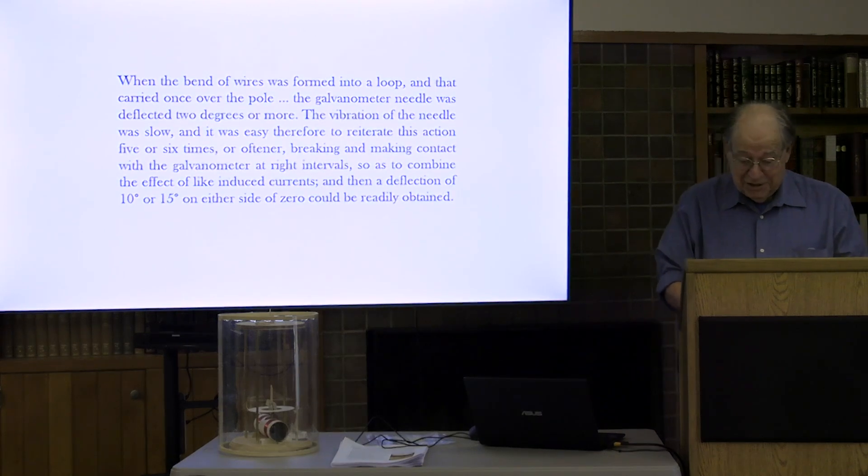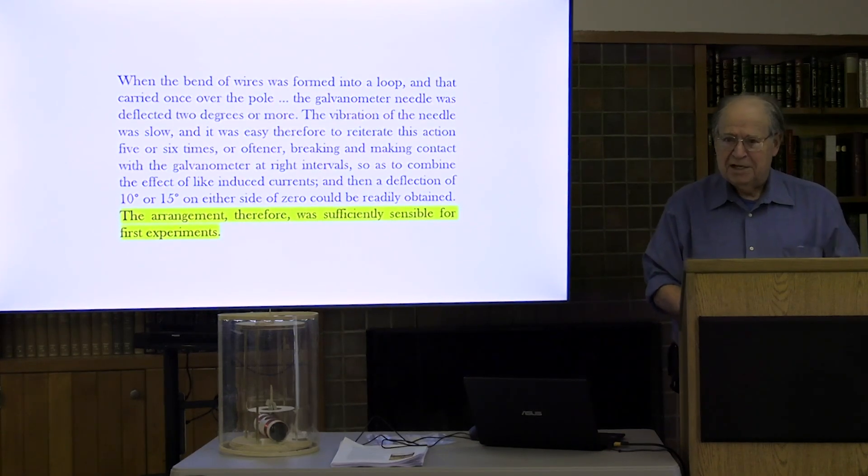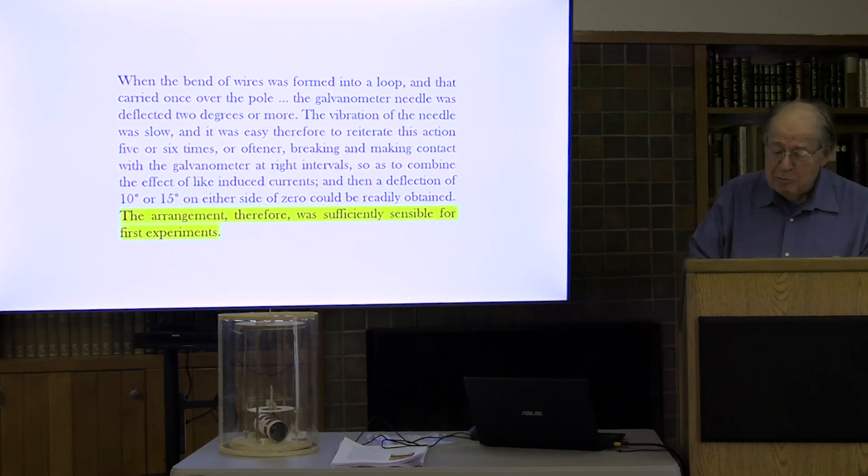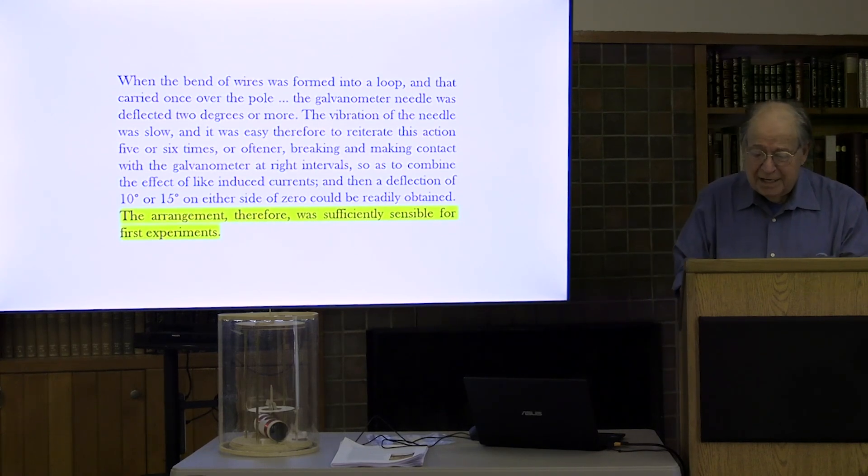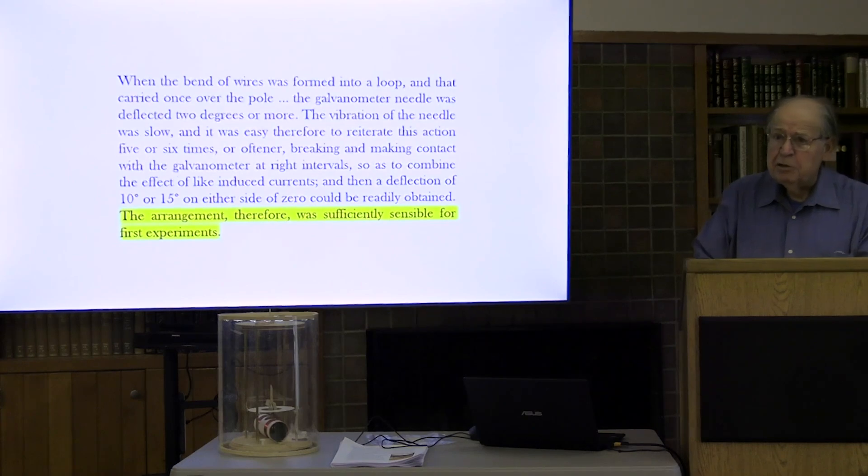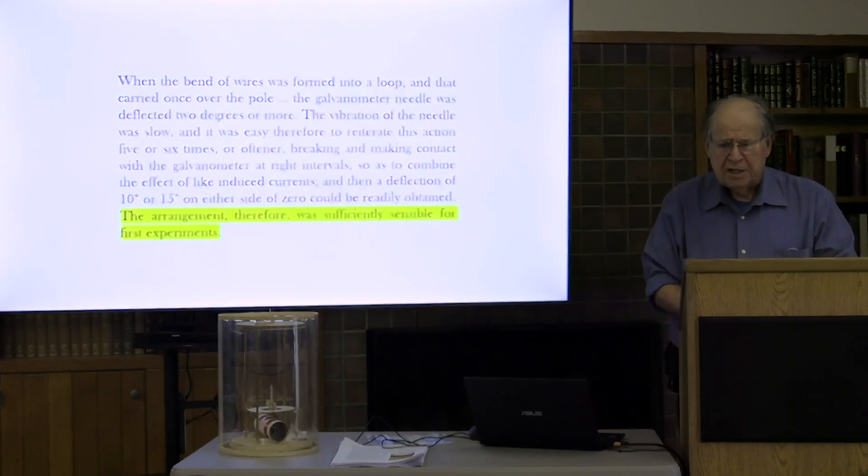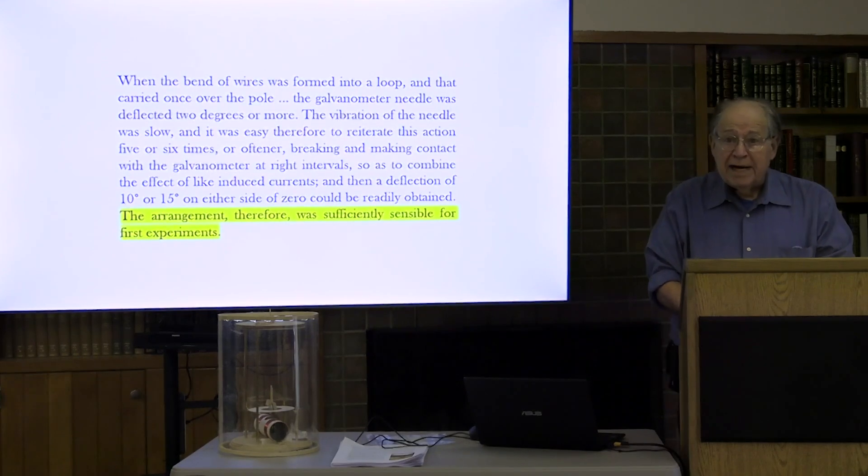But no such momentous announcement is forthcoming. Instead, Faraday writes this thundering anticlimax. The arrangement, therefore, was sufficiently sensible for first experiments. Faraday was not here trying to establish the galvanometer as a counting device. He was merely making sure that it was sufficiently sensitive, sensible in his wording, to register the currents involved. But how could he so completely neglect this demonstration of its capacity to count lines of force, which is surely a far more significant result? In fact, the experiment demonstrated no such result. It merely showed that doing the same thing again and again produced the same outcome again and again, repeated impulses of current, which we knew already that the galvanometer would sum up.